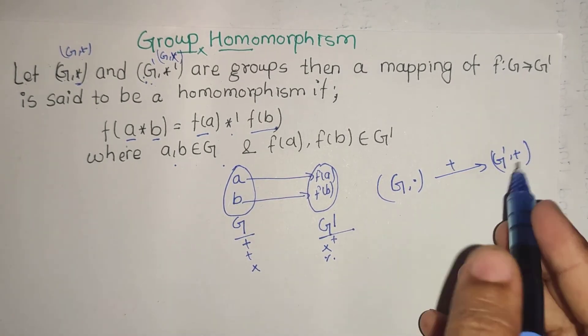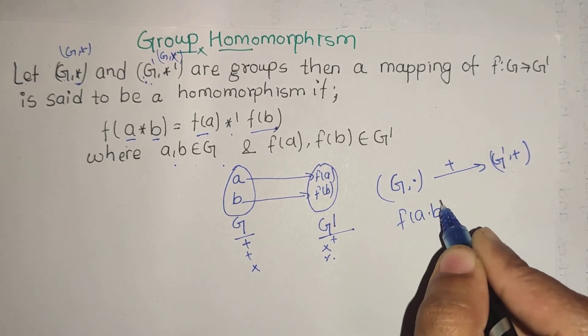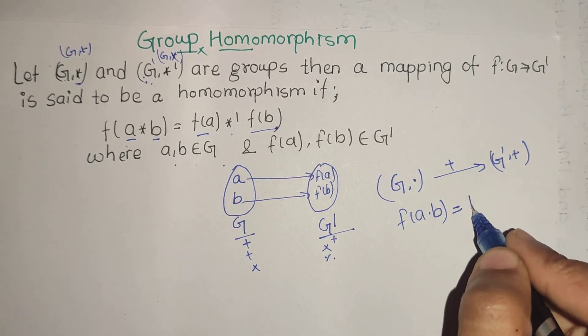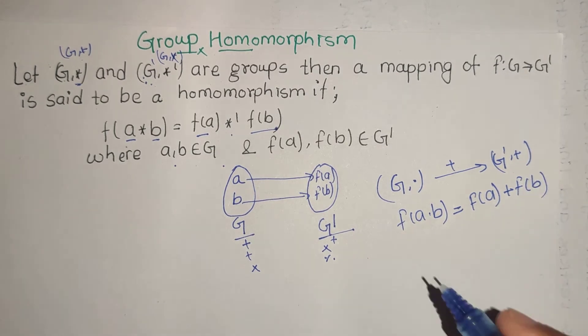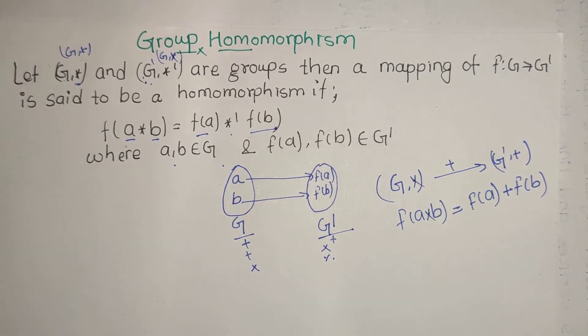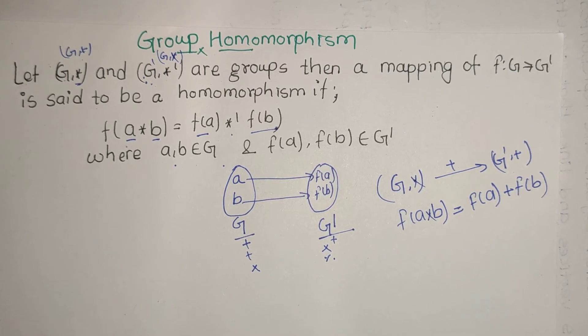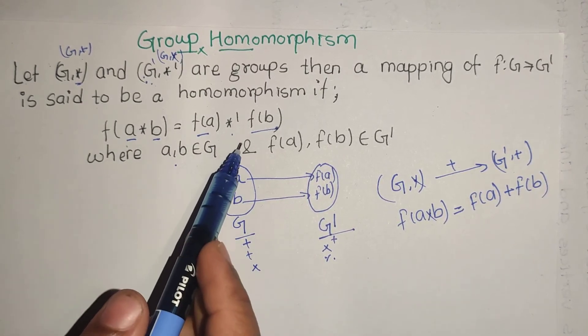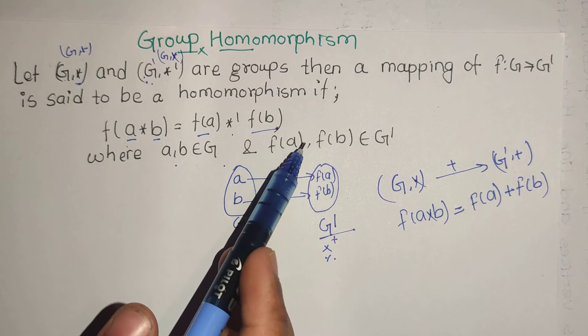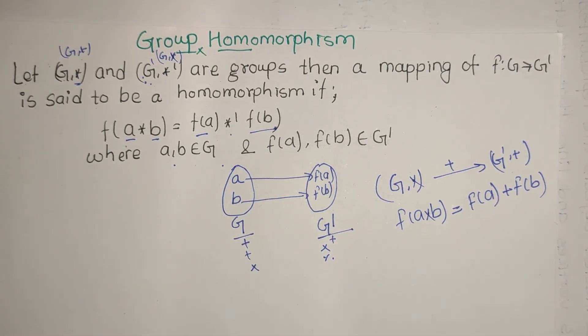The mapping must satisfy: f(a*b) = f(a) *' f(b). That means if a and b are any elements in G with their operation, then the image equals f(a) with the binary operation of the second group G' applied to f(b), which is an element of the second group.